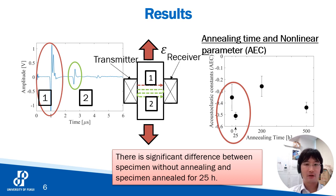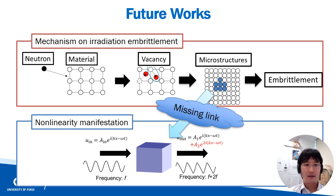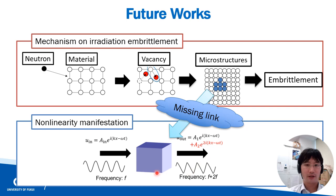This result suggests that the non-linear ultrasonic method can be used to evaluate irradiation embrittlement. Thanks to many years of research on irradiation embrittlement, the mechanism by which neutron irradiation causes embrittlement is very well understood. As a result, we know that one of the causes of the embrittlement is the formation of microstructures in materials. On the other hand, the mechanism by which the formation of microstructures affects the non-linearity of the material is not clear. In other words, there is a missing link between microstructure formation and non-linearities. My ultimate goal is to clarify this point so that I can propose a safer non-destructive evaluation method for nuclear reactors.